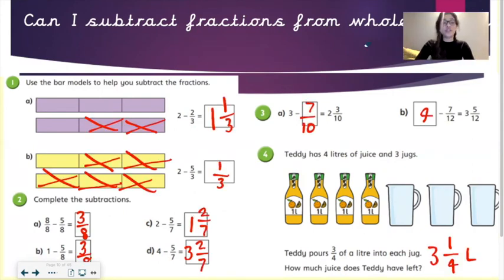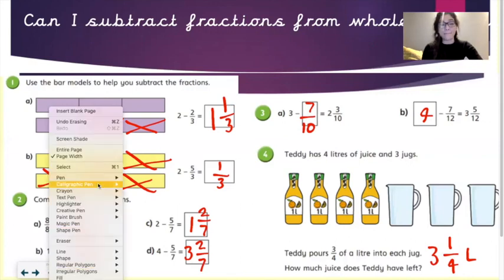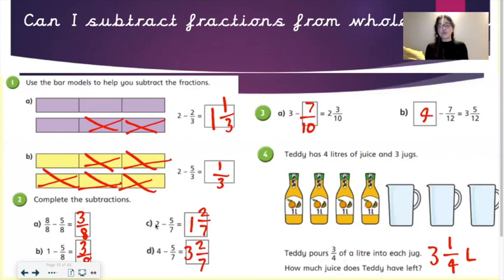Here are your answers. Question number one. Use the bar models to help you subtract the fractions. This is my favourite method, boys and girls. Part A, 2 take away 2 thirds equals 1 and a third. Next question, B. 2 take away 5 thirds equals a third.